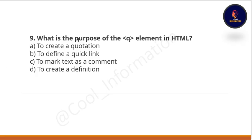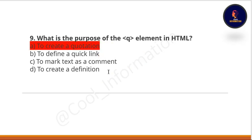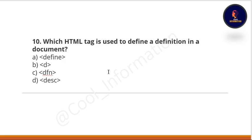Question nine: what is the purpose of the q element in HTML? Option A: to create a quotation. Option B: to define a quick link. Option C: to mark text as a comment. Option D: to create a definition. The correct option is A — to create a quotation.